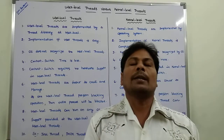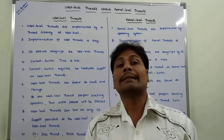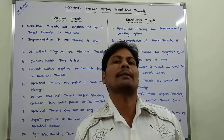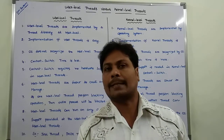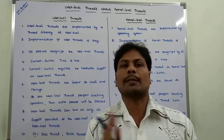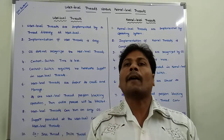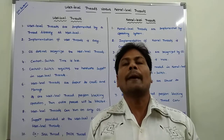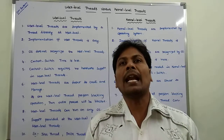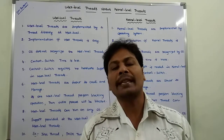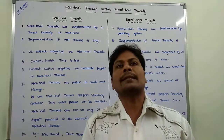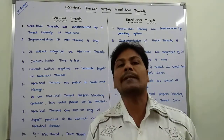The first difference is that user-level threads are created by a thread library at the user-space by the users. Whereas, in the case of kernel-level threads, they are implemented by the operating system at the kernel-space.